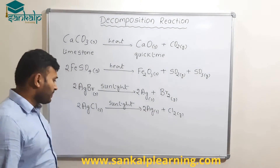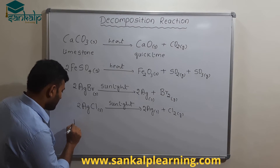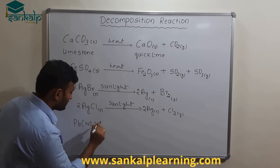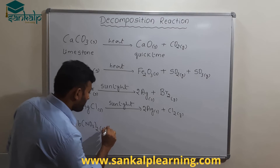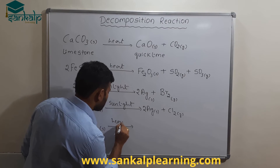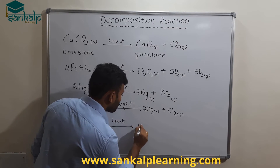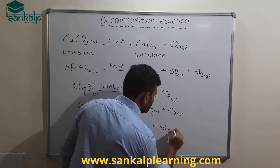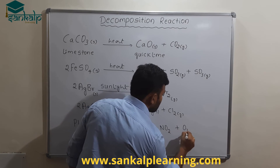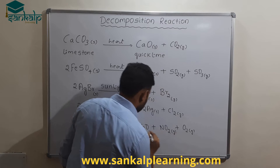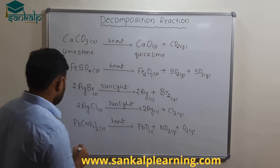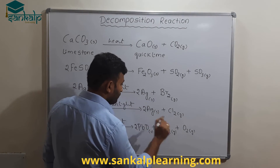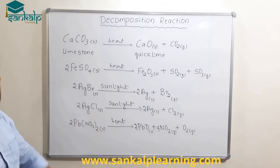Another reaction is lead nitrate, Pb(NO3)2. When lead nitrate is heated, it gives lead oxide PbO, nitrogen dioxide NO2, and oxygen O2. Balancing this: 2Pb(NO3)2 gives 2PbO plus 4NO2 plus O2. This is how we balance the reaction.